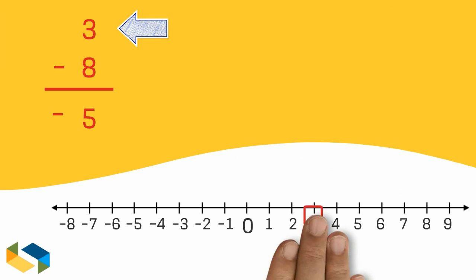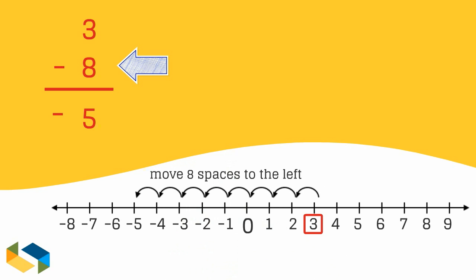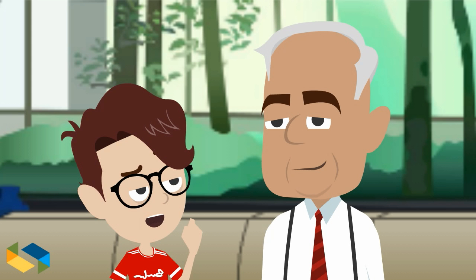We locate three, the number we need to remove from. We go eight spaces to the left, and we get the answer as minus five.